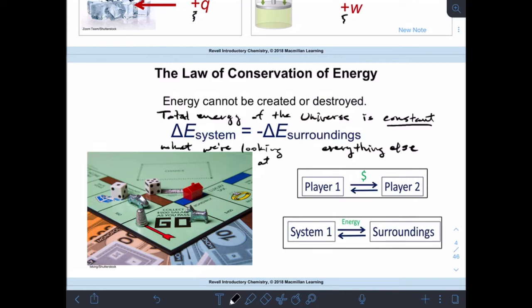So this idea of E system is negative E surroundings just means that whatever energy the system loses, the surroundings gain, or whatever energy the surroundings lose, the system gains. They trade. The energy has to go from one to the other in equal amounts.